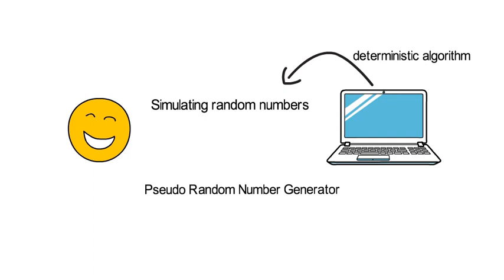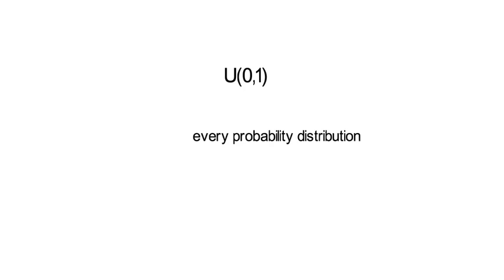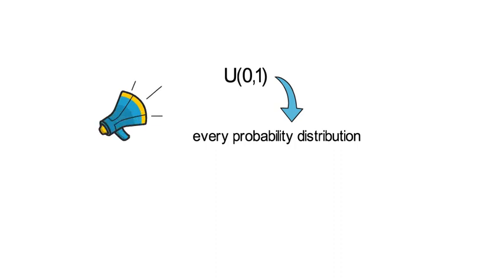The basic building block of any Monte Carlo simulation is the uniformly distributed random variable, which we denote as U(0,1) — uniformly distributed within the interval 0 to 1. Nearly every probability distribution can be generated from a sequence of such uniformly distributed random variables. That is a very strong result. We therefore continue to understand how to generate that important uniform distributed random number.